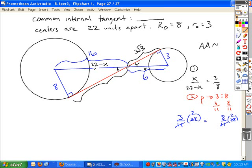Using the same idea, what's this length going to be in the larger triangle? 8 root 3. So what's your total length of the common internal tangent? 8 root 3 plus 3 root 3 is? 11 root 3.